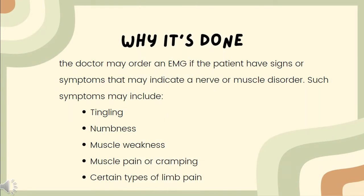Why it is done: The doctor may order an EMG if the patient has signs or symptoms that may indicate a nerve or muscle disorder. Such symptoms may include tingling, numbness, muscle weakness, muscle pain or cramping, and certain types of limb pain.